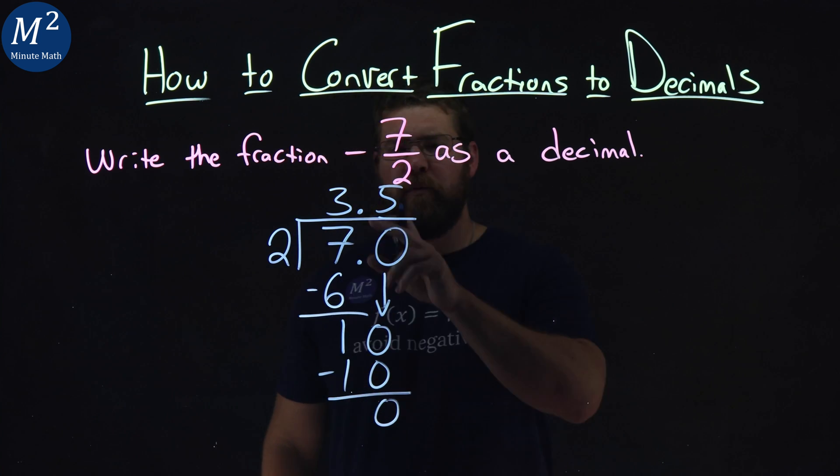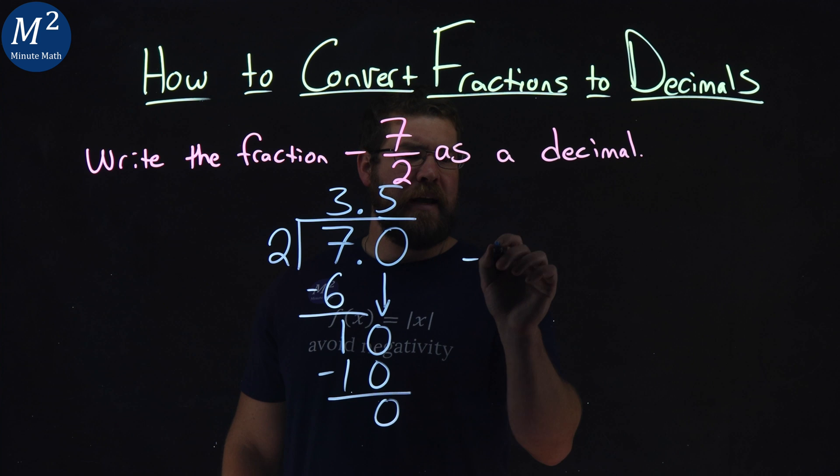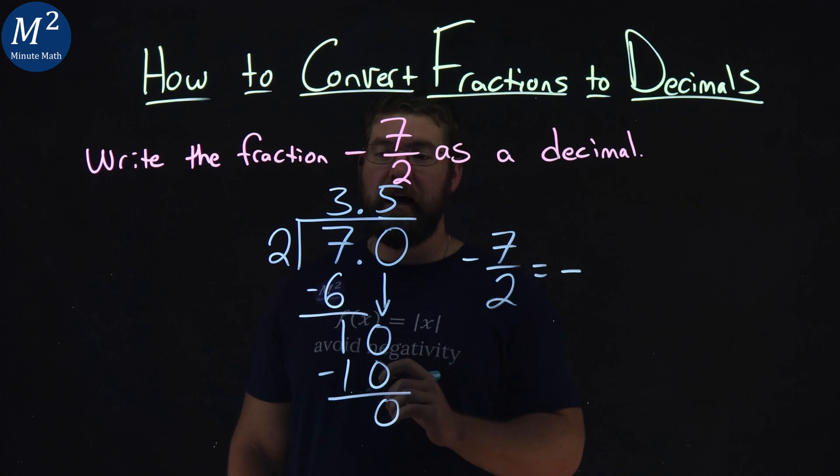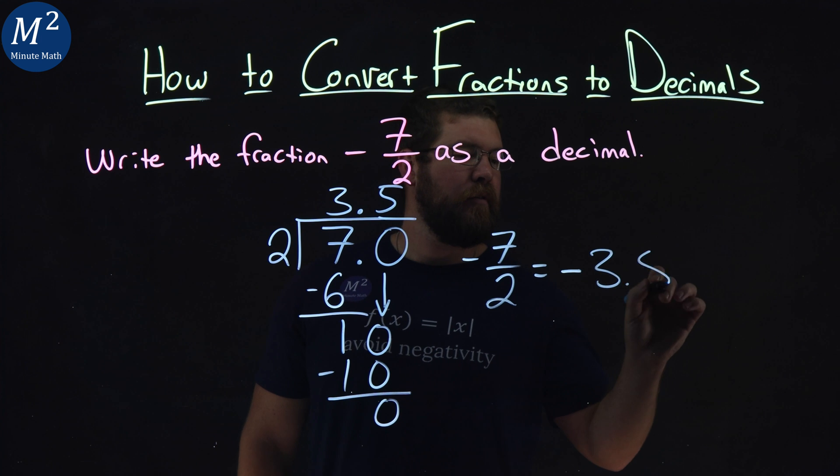So we have 3.5 up top. So what does that mean? Negative 7 halves is equal to, don't forget it has to be negative, negative 3.5.